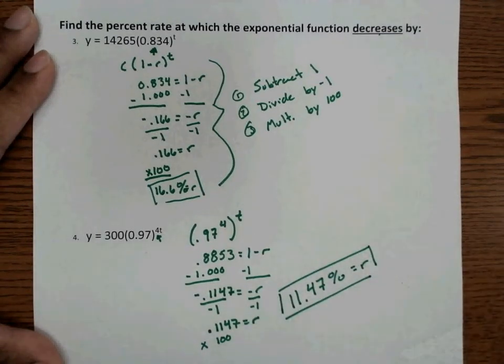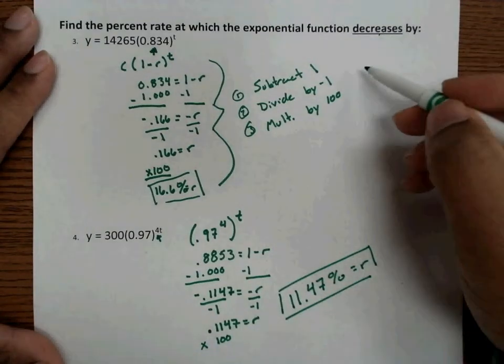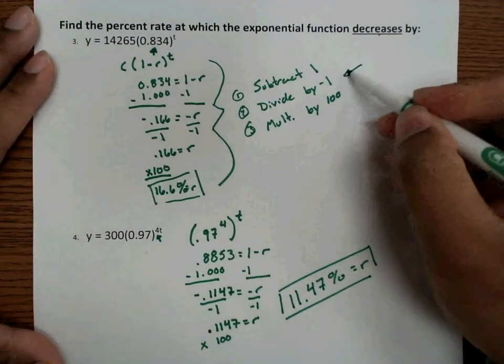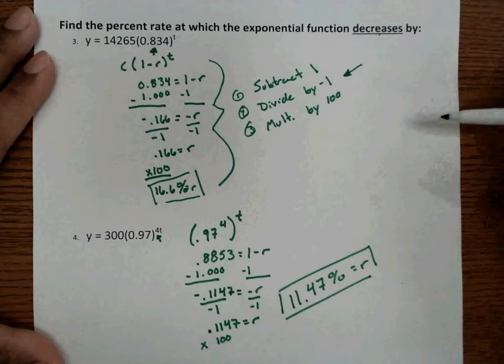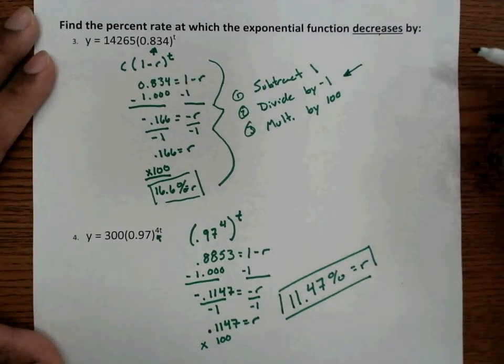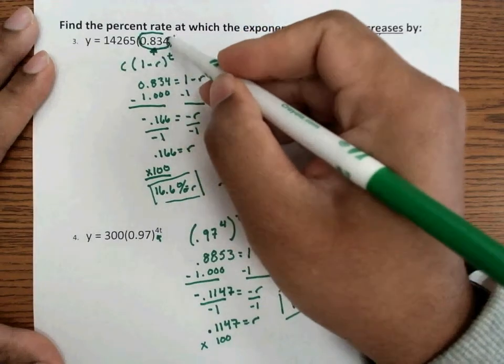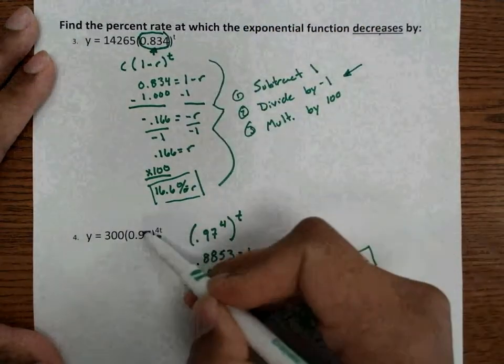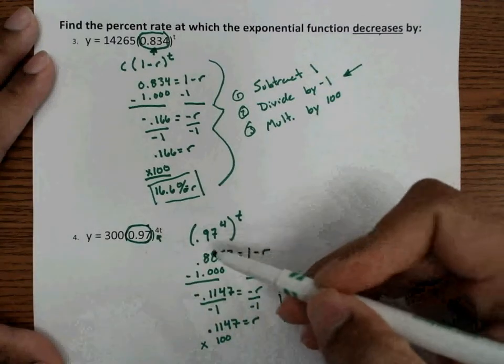So remember, the only difference between exponential growth and exponential decay is that if it's decay, you have to add in the extra step by dividing by the negative 1. And remember, the way we determine if it's exponential growth or exponential decay is by looking at the number inside the parenthesis. If it's less than 1, then it's decay. If it's greater than 1, then it's growth.